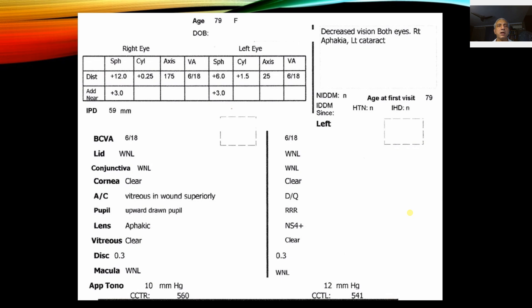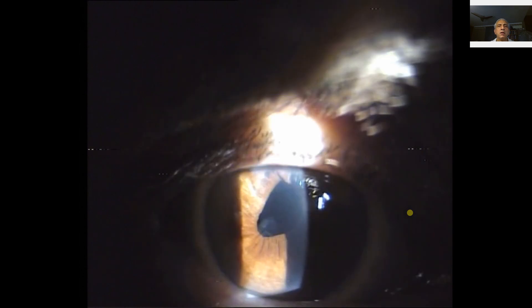The cup-disc ratio was 0.3 on both sides. Intraocular pressure was 10 mmHg on the right and 12 mmHg on the left eye. In patients with aphakia, you typically see a deep anterior chamber, tremulousness of the iris, a wound depicting maybe intracapsular or extracapsular surgery, and a jet black pupil.